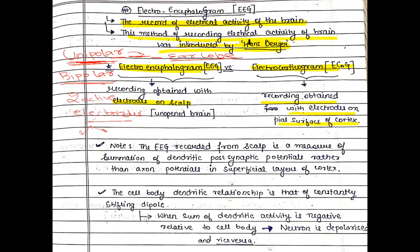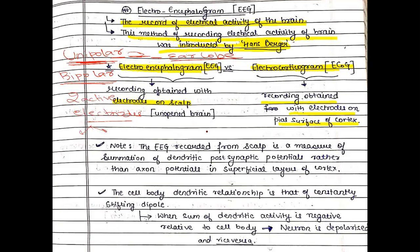Electrical activity of the brain can be of two types: it can be action potentials which can spread, or it can be local potentials like the dendritic post-synaptic potentials in the dendrite. What will you measure from EEG? The answer is post-synaptic potentials.